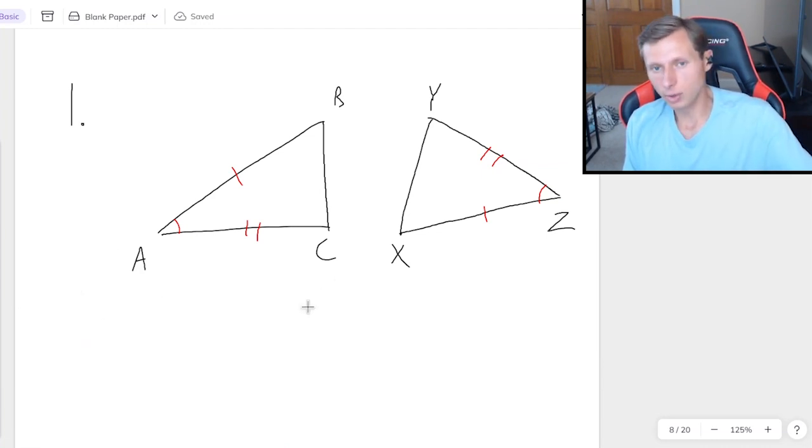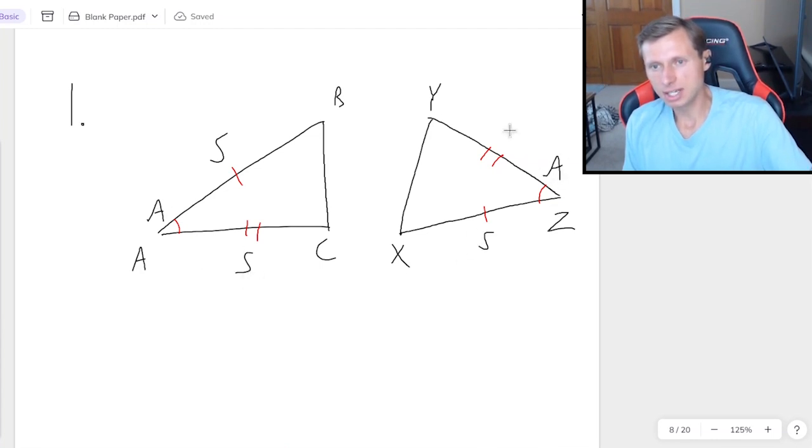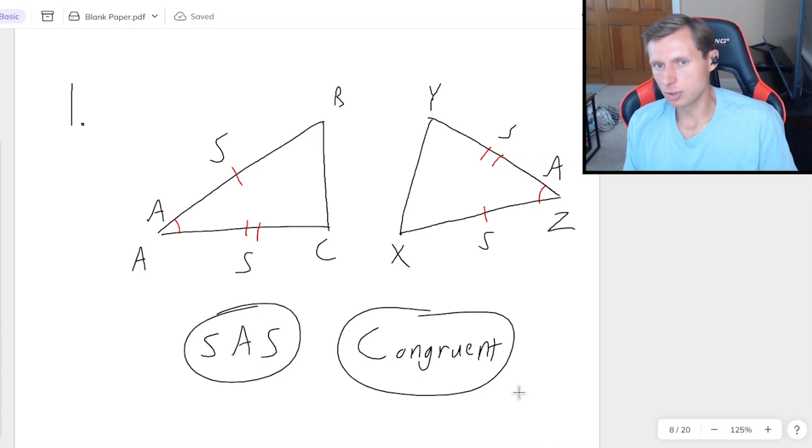And here's the answer. Yes, they are congruent because I have a side, an angle, and another side. Same thing here. So that means I have SAS. And yes, they are congruent. So that's my answer for this first one.